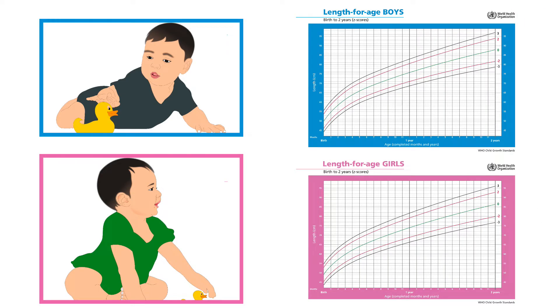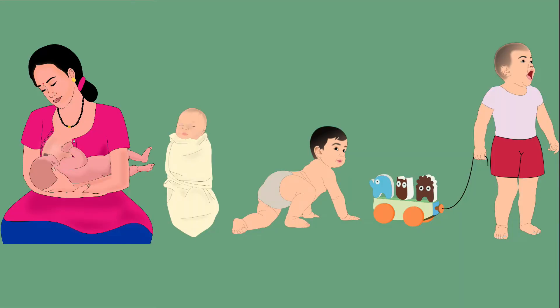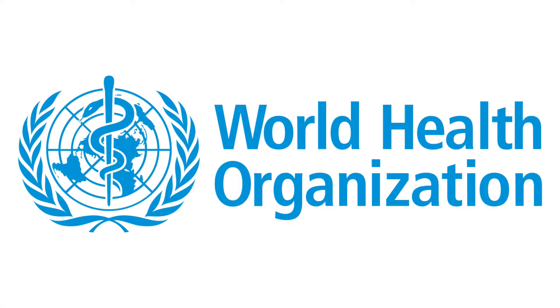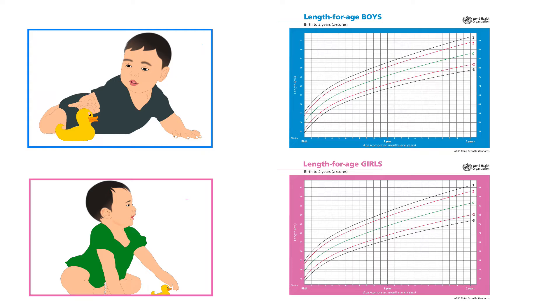It is important to use growth charts as per the child's gender. In this tutorial, growth charts used are for children from 0 to 2 years of age. They are from the World Health Organization, also known as WHO. These growth charts are available on their website www.who.int. Please select the appropriate charts as per the child's gender, download and print them.